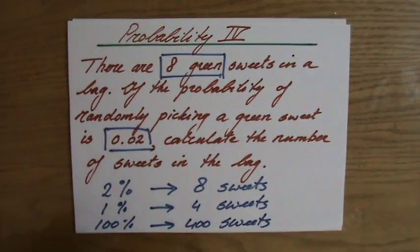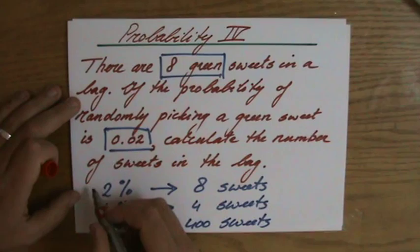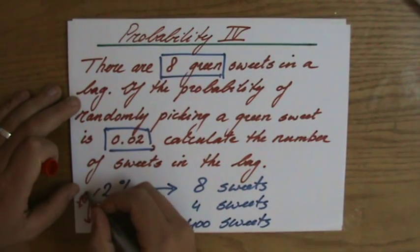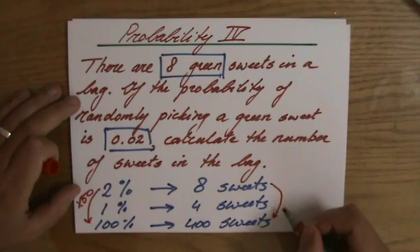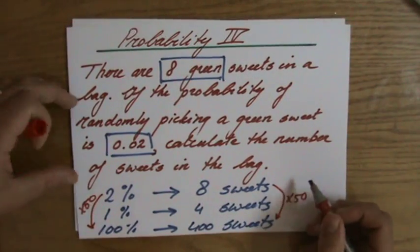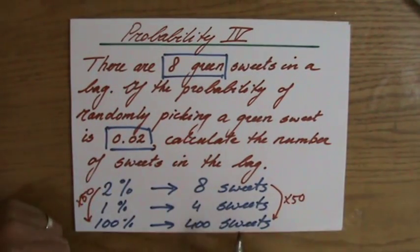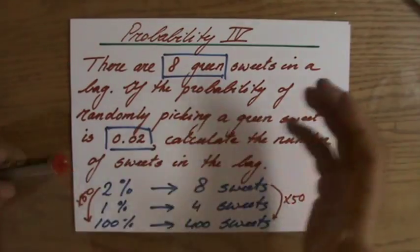Or perhaps if you are one of those smart students you would say well if two percent are eight sweets, times two by fifty to go to a hundred percent. So eight times fifty. So eight sweets times fifty is four hundred sweets. So the total amount of sweets in that bag is four hundred.